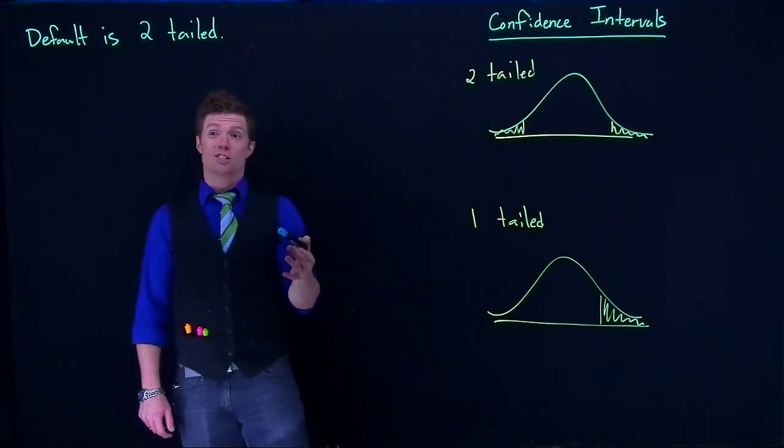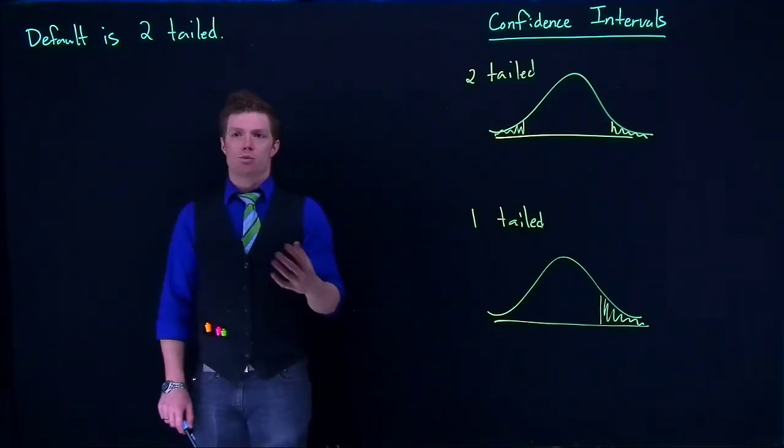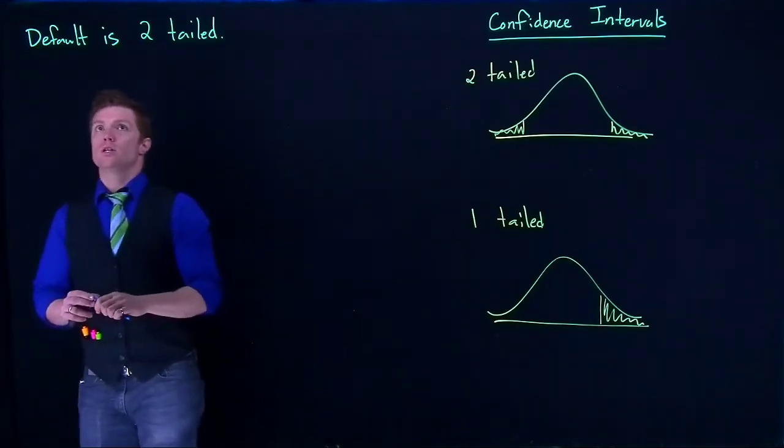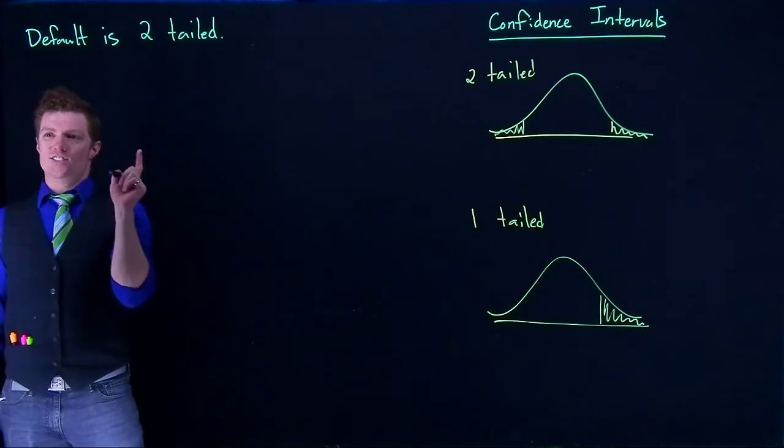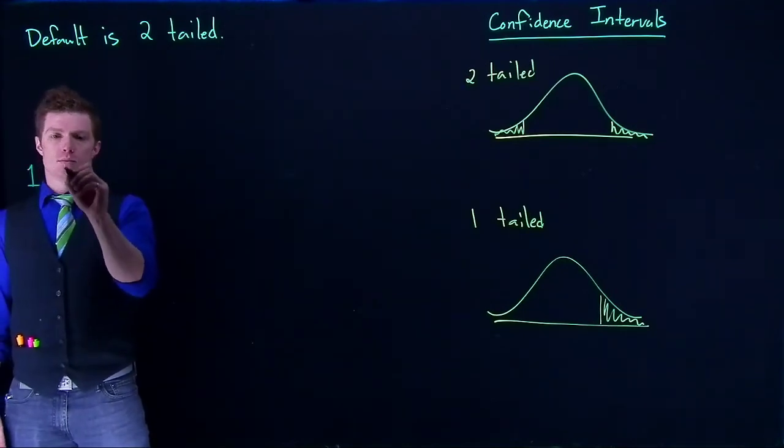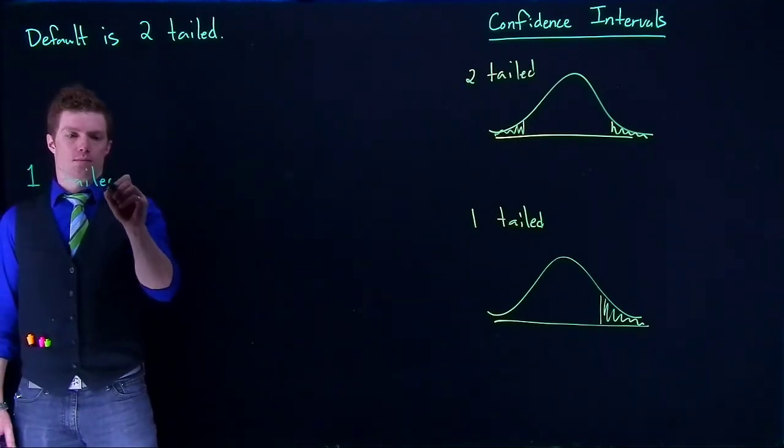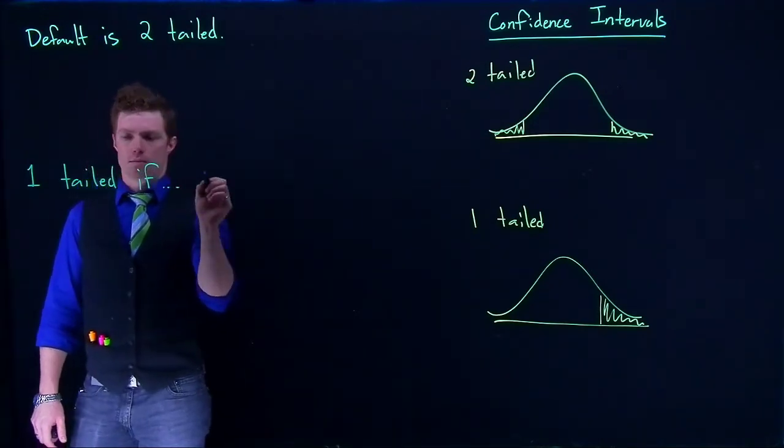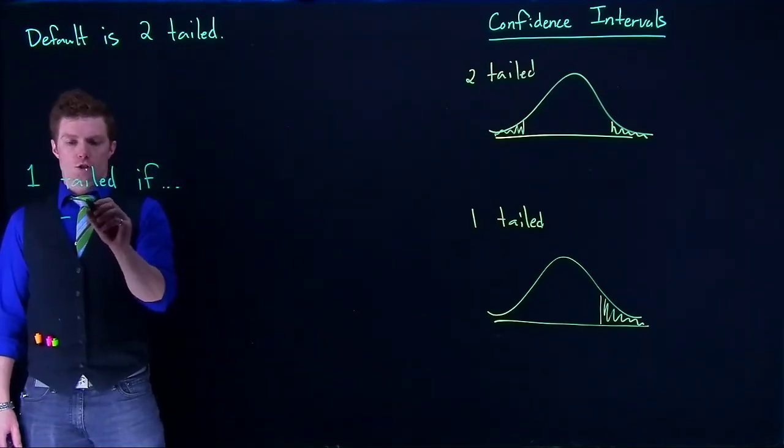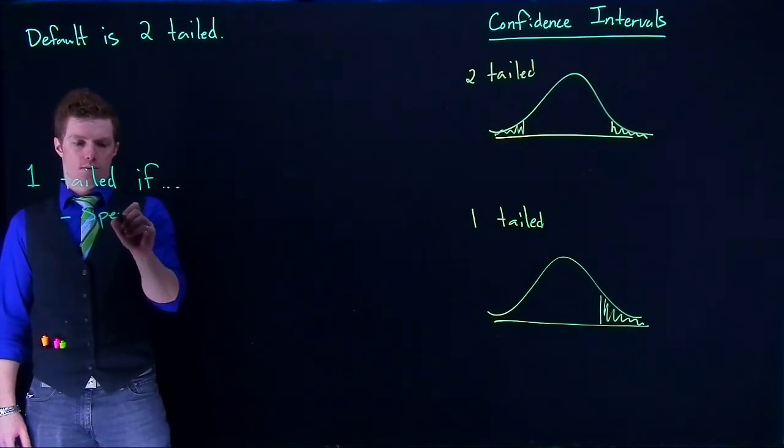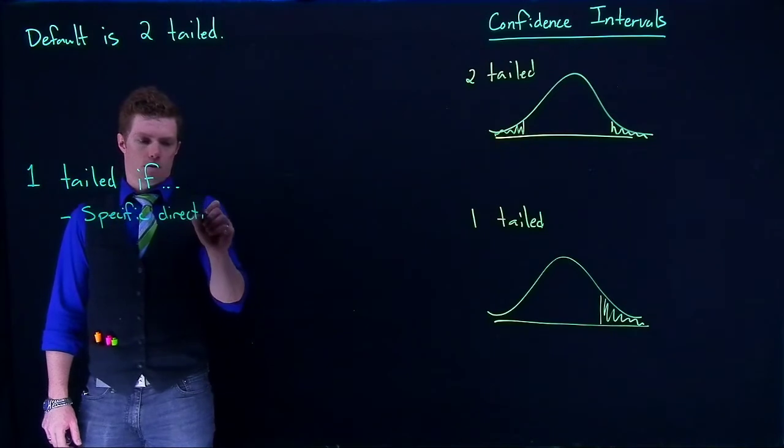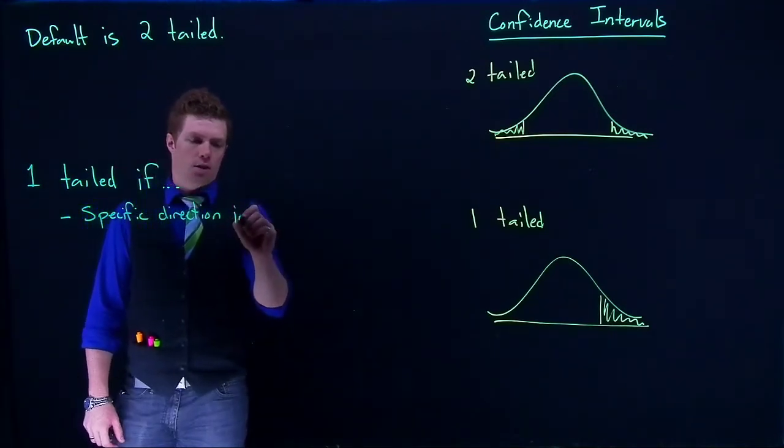So if we don't get any specific direction in the problem, then we know that we are going to be doing a two-tailed. Now we know that we're going to be doing a one-tailed if there is specific direction in the problem.